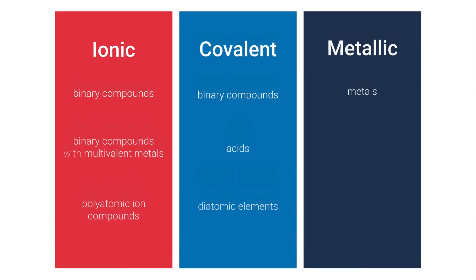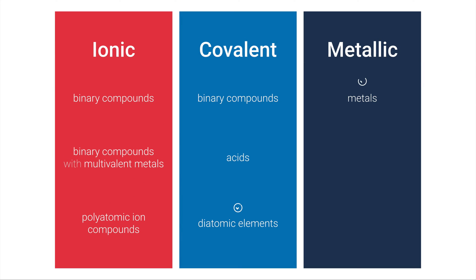Let's look at our unit outline. We've got three different types of bonds: ionic, covalent, and metallic. We've already checked off two of these seven subtopics — diatomic elements and metals. In this video we're in the ionic area, and in particular we're going to look at binary compounds.